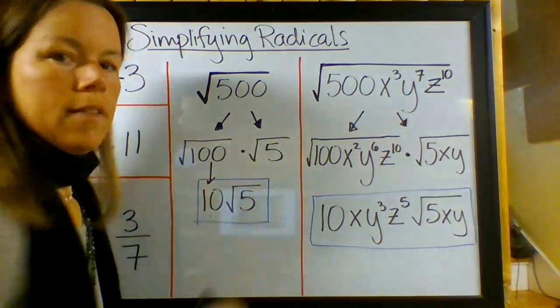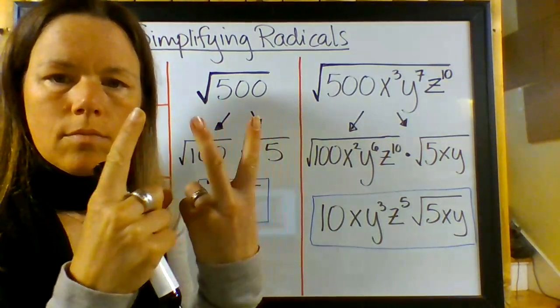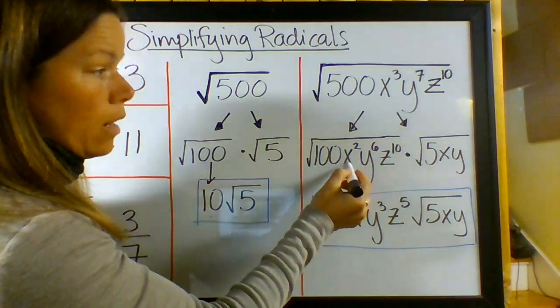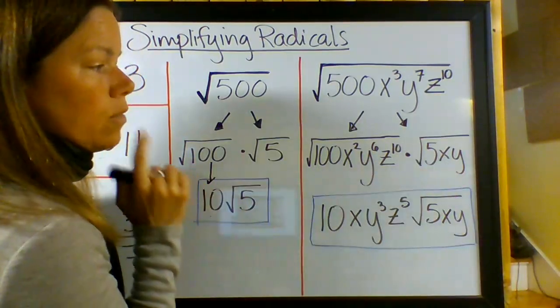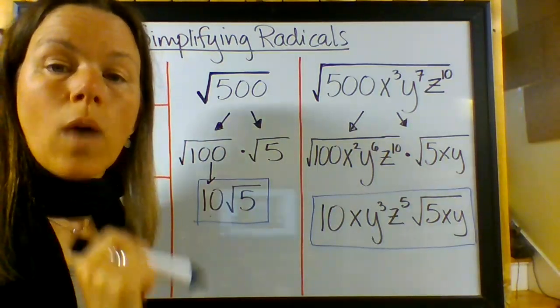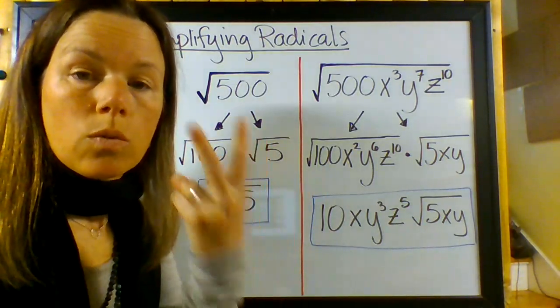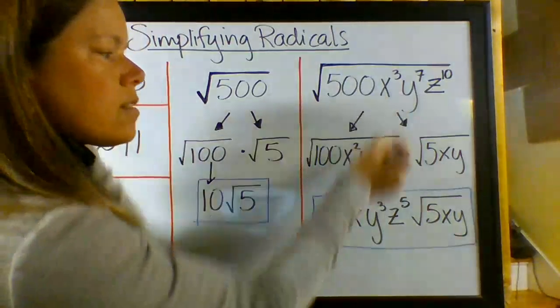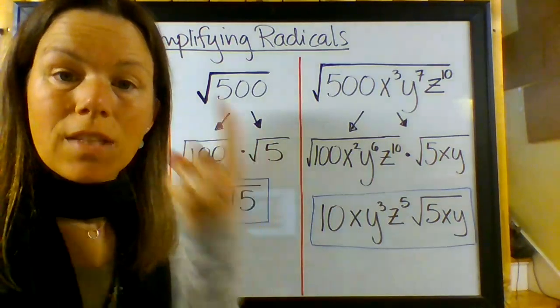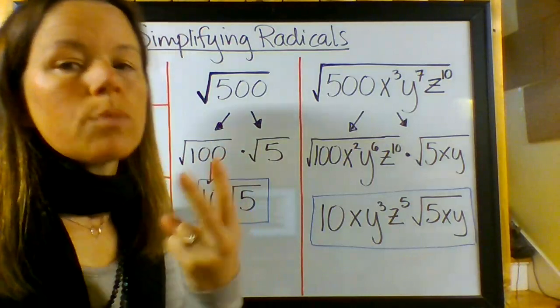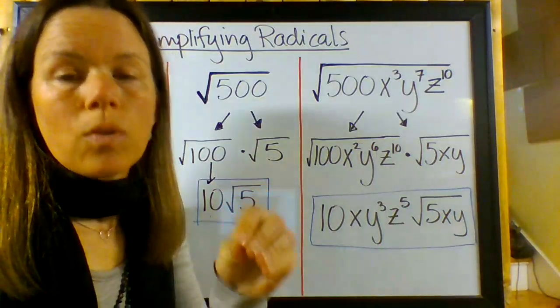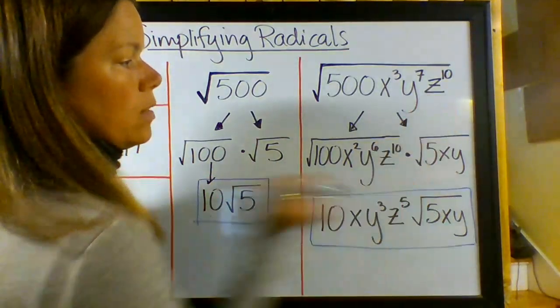Then I looked at X to the third, that is, X times X times X, right? One of them is a perfect square, X squared, and one of them is not. So, I put the perfect square, the biggest perfect square in the left, and then X on the right. Y to the seventh. The largest perfect square in Y to the seventh is Y to the sixth, because Y to the third times Y to the third equals Y to the sixth. So, I can put Y to the sixth on the left and Y on the right. And Z to the tenth is a perfect square. Z to the fifth times Z to the fifth. We remember, we explored this. We looked at how exponents that are even, if anything with an even exponent, is a perfect square, right? So, I put the Z to the tenth there.